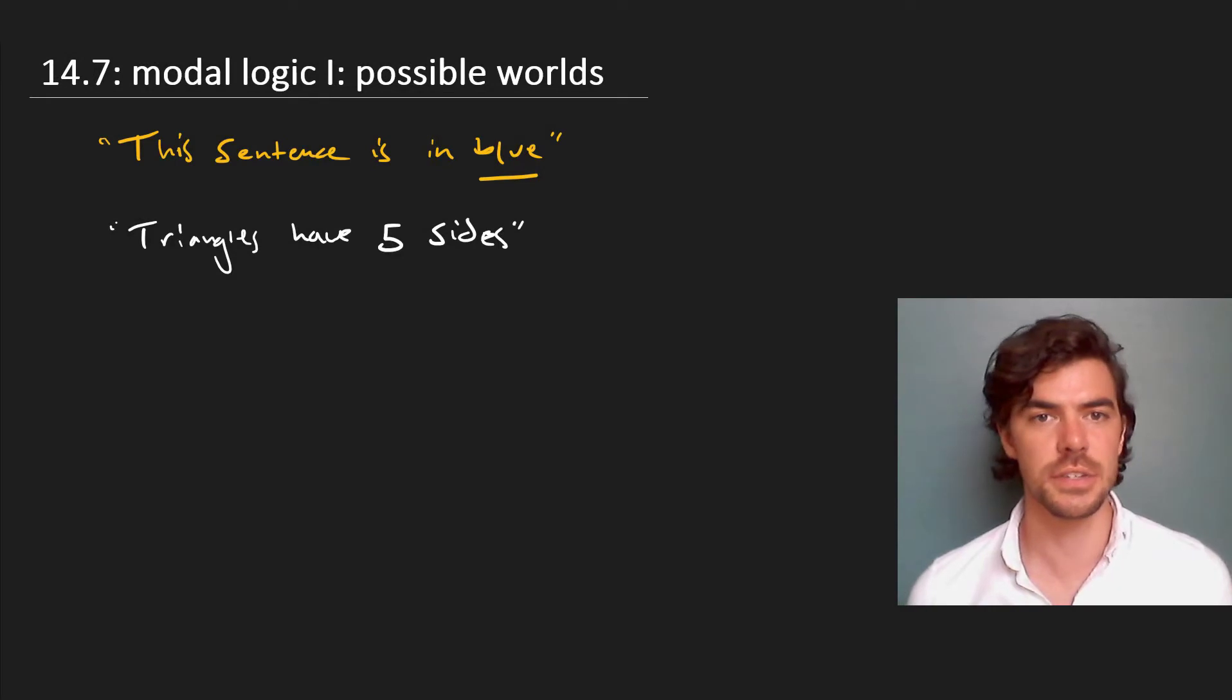Have a look at these two sentences here. Both are false. This sentence is in blue, written in yellow ink, is false, and triangles have five sides is also false. That's all classical logic has to say about these things in terms of truth and falsity. But it seems triangles have five sides is more false